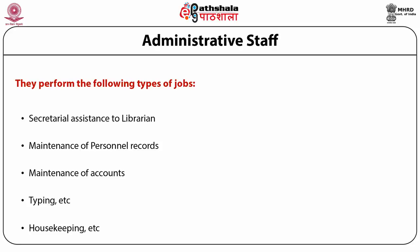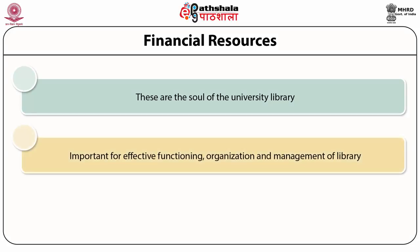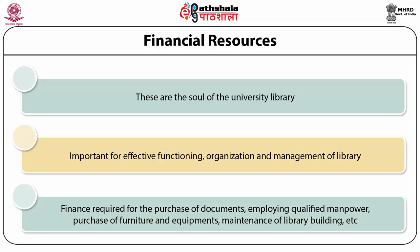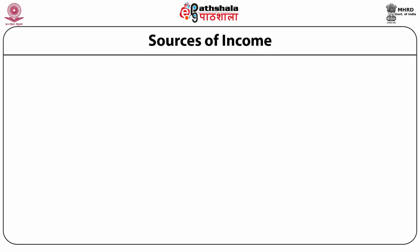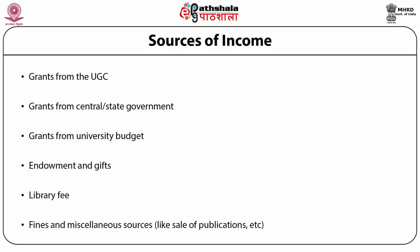In order to manage the collections and staff, university library needs sufficient financial resources. These are the soul of the university library, important for effective functioning, organization and management. Finance is required for the purchase of documents, employing qualified manpower, purchase of furniture and equipment, and maintenance of library buildings. Some important sources of finance include grants from the UGC, grants from central and state government, grants from university budget, endowments and gifts, library fee, fines, and miscellaneous sources like sale of publications.